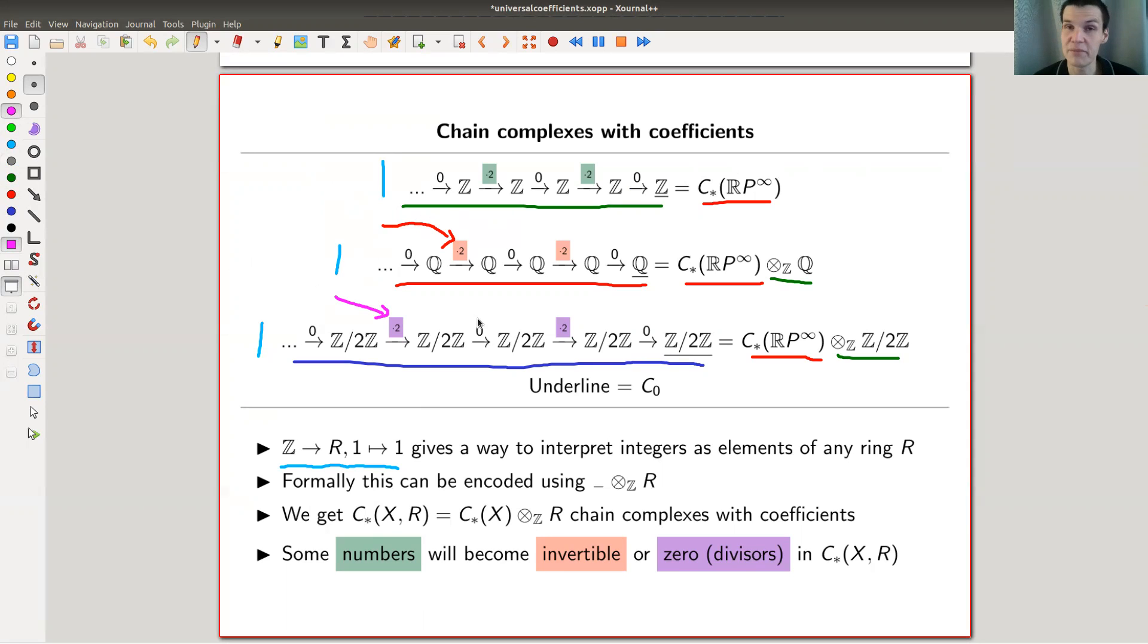So the element 2 makes sense in any ring - it's just 1 plus 1 in that ring. But for example, in Z mod 2, the element 2 is actually 0. While in Q, the element 2 is invertible because I have the inverse which is 1/2, which doesn't exist integrally. Of course there's no inverse. And as I said, here the inverse is 0. So if you vary your coefficients, what really happens is that your maps get really different behaviors. Numbers, when interpreted in your favorite ring, could for example get invertible or they become 0 - very different and extremely different situations.